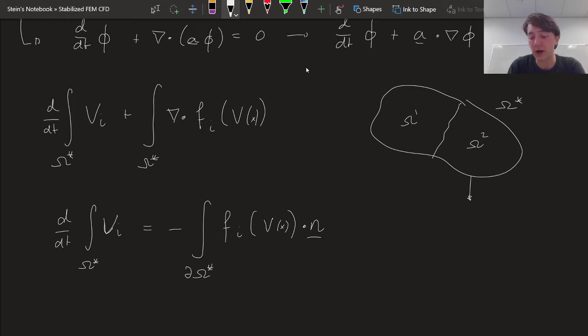then it has to be satisfied on the complete omega star, but also on omega 1 and omega 2. If we subtract all these equations from one another, that is saying that whatever flows out of omega 1 has to flow into omega 2, across that boundary.